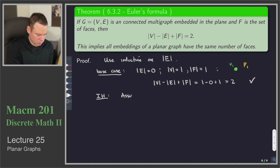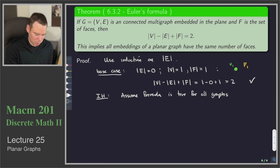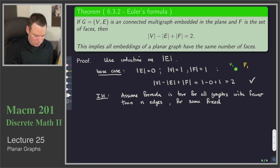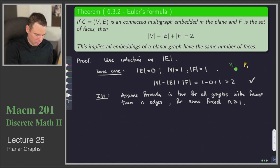Now we can go to our induction hypothesis: we will assume the formula is true for all graphs satisfying the hypothesis — connected planar graphs — with fewer than n edges, for some fixed n greater than or equal to 1. Assuming the formula holds for all such graphs with fewer than n edges, we want to prove it's true for graphs with n edges. So now we're in our inductive step.